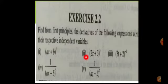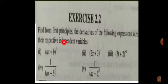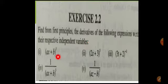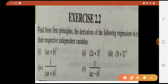Okay, now this is Exercise 2.2. The question is: find from first principles the derivatives of the following expressions with respect to their respective independent variables. What did we do in the previous exercise? In 2.1, if you remember, all the independent variables were x — all the questions had the same independent variable, which was x.